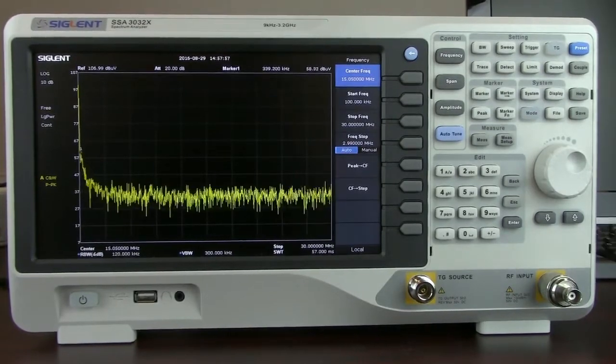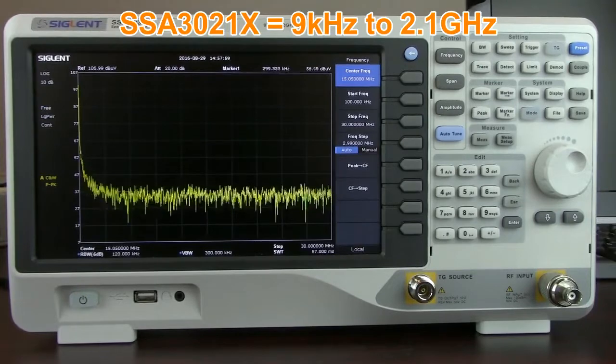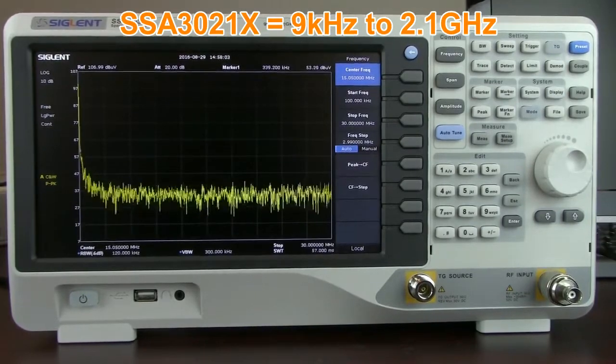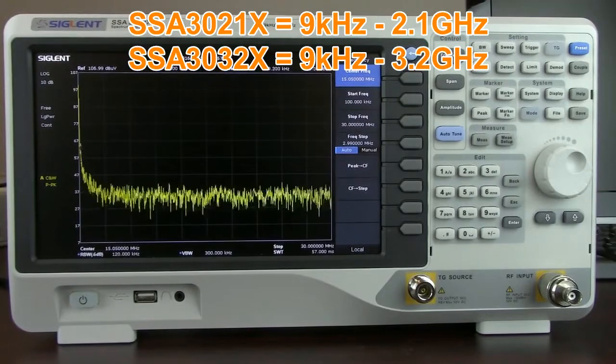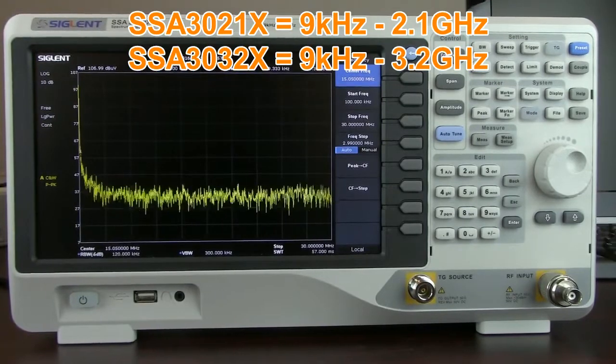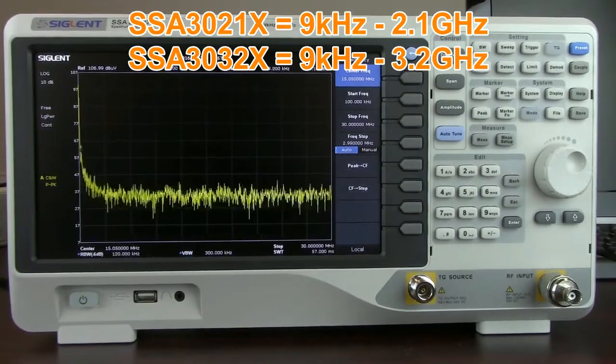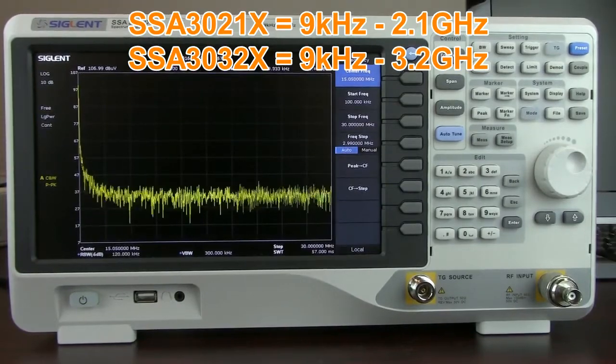There are currently two models available. The SSA 3021X operates from 9 kHz to 2.1 GHz and the SSA 3032X operates from 9 kHz to 3.2 GHz. Both are based on a swept super heterodyne design that has historically provided great performance without a high price tag.